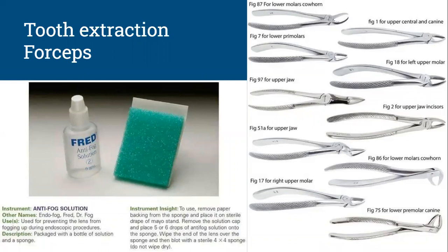The last bullet point talks about the throat pack. Read the pearl of wisdom on the next pages. A throat pack is a ray-tac we use to cover the pharynx — because we're drilling and taking teeth out, there's irrigation, oral secretions, and blood. We don't want any of that lodged into the throat. This will always be removed before extubation; that is why we do our count. You are responsible for making sure that throat pack is removed.